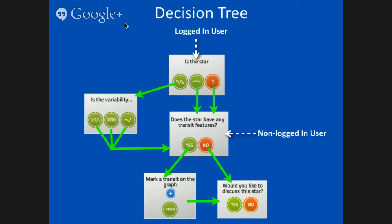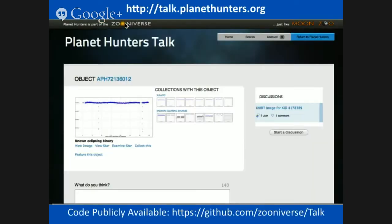Quarter one of Kepler data is 30 days. Other quarters are actually 90 days, and we break those up into three 30-day chunks. How do we actually do our decision tree? There's two modes of operation. If you're non-logged in, you go straight to: does the star have any transit features, yes or no? If yes, go mark the drop. If you're a logged in user, we ask you a little bit more about the style of variability, then you go into the other question.